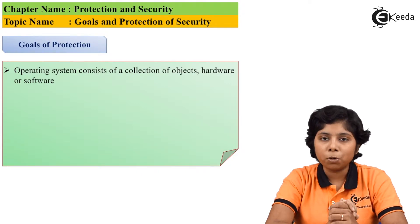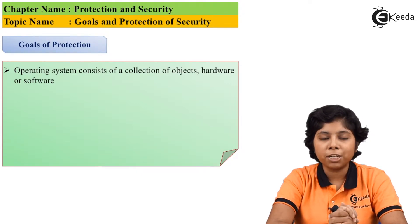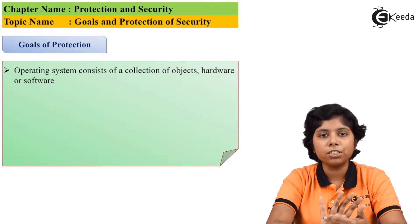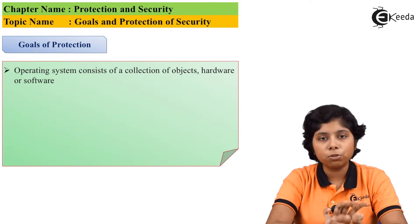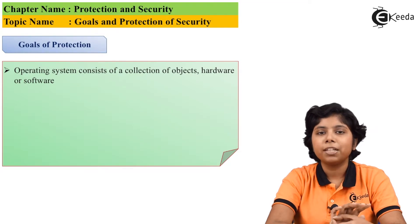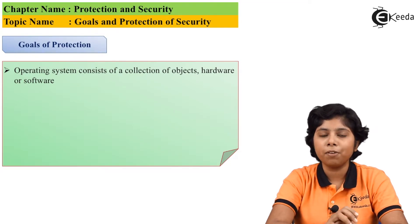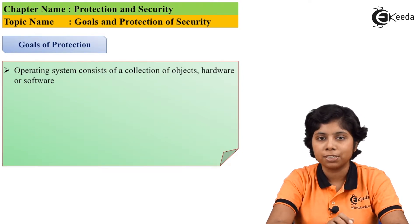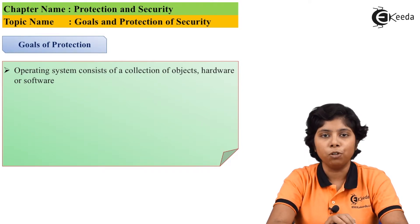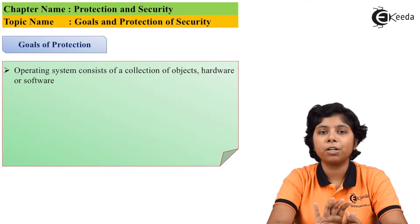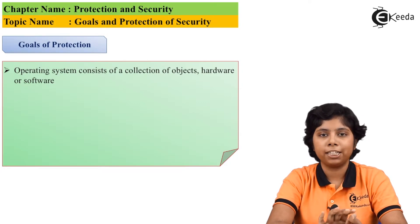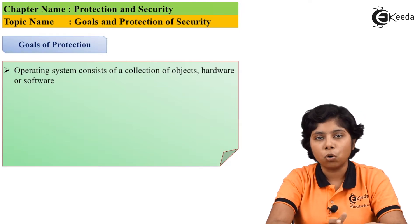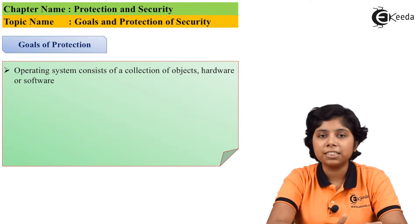While providing protection, the user first needs to be authenticated — that is the first need of protection. If the user is an unauthorized user, then any access right given to use the resources of the system is not meaningful. So the first need for protection is user authentication.